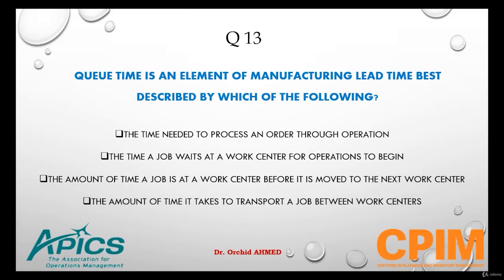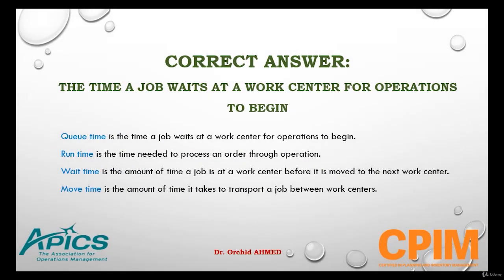Question number 13. Q time is an element of manufacturing time best described by which of the following? The options are: the time needed to process an order throughout an operation; the time a job waits at a work center for operation to begin; the amount of time a job is at a work center before it is moved to the next work center; or the amount of time it takes to transport a job between work centers. Q time is defined as the time a job waits at a work center for operation to begin.